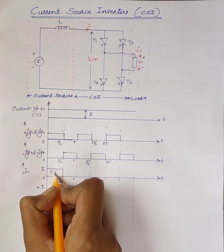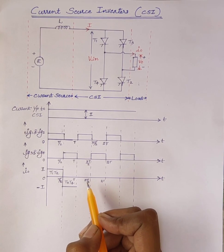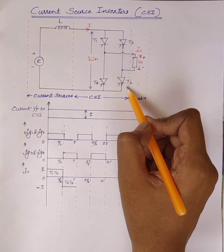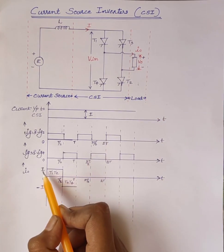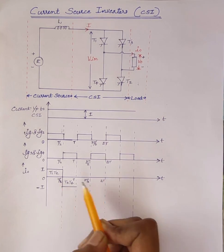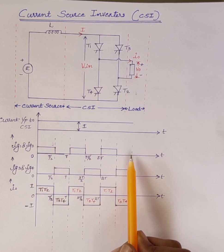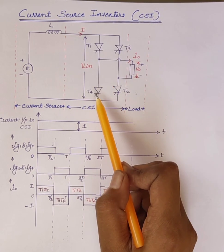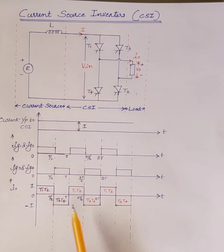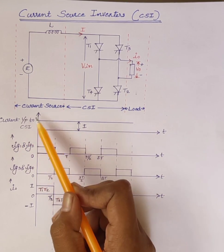Here T1 and T2 conduct. Then T3 and T4 conduct. Again from T/2 to 3T/2, T1 and T2 are on and the output current I0 is plus I. After that T3 and T4 conduct and the output current is minus I, and so on. The output frequency of I0 can be varied by controlling the frequency of triggering of thyristor pairs T1, T2 and T3, T4. From the output current waveform, it is clear that the output current I0 is a square wave of amplitude equal to the DC input current I.